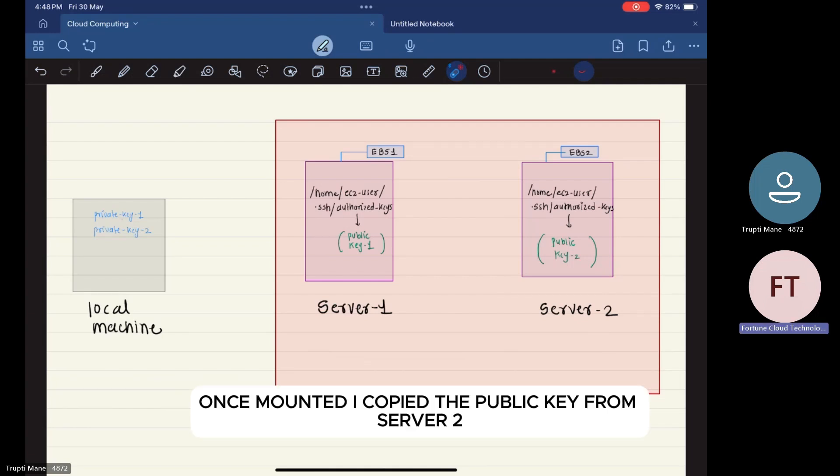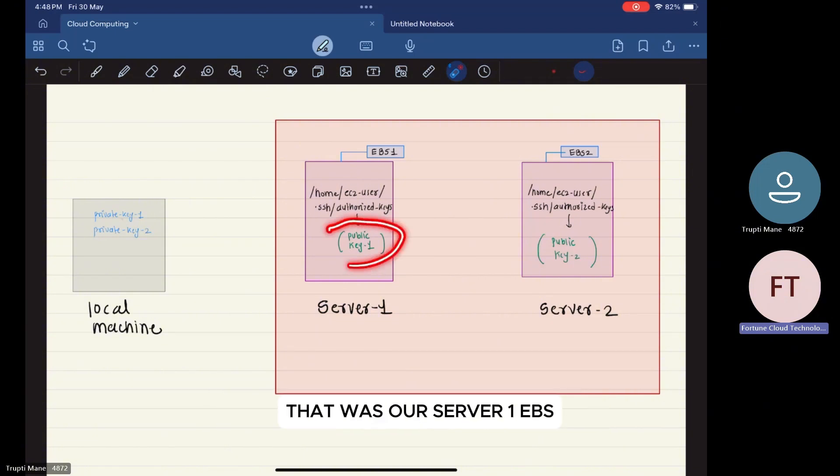Once mounted, I copied the public key from server2 and replaced the old public key on the mounted volume, that was server1 EBS.